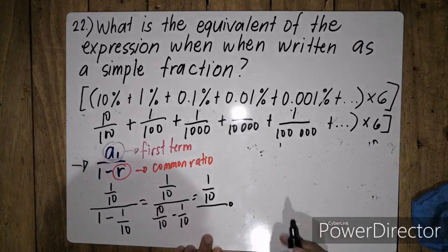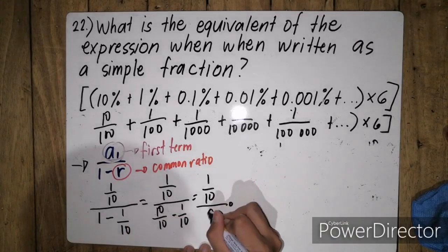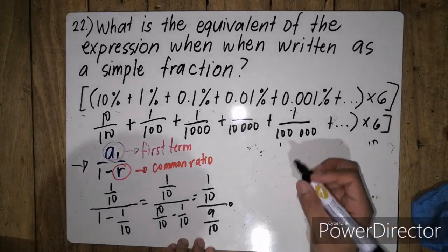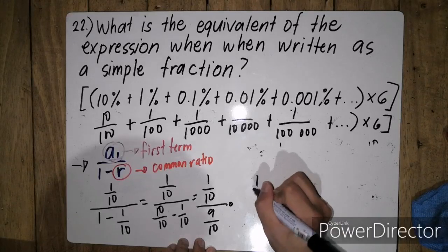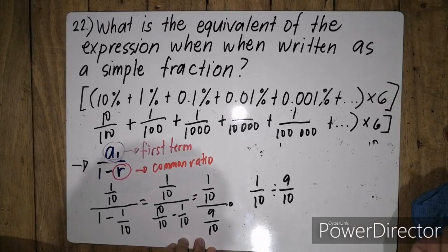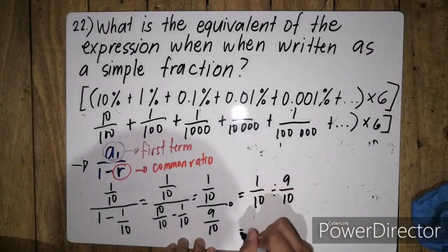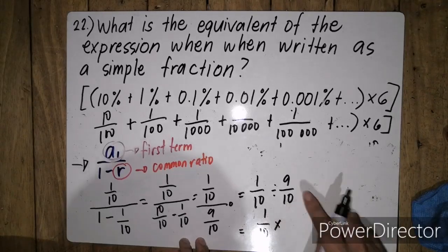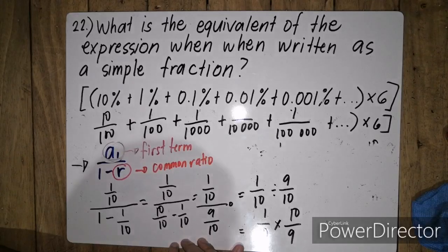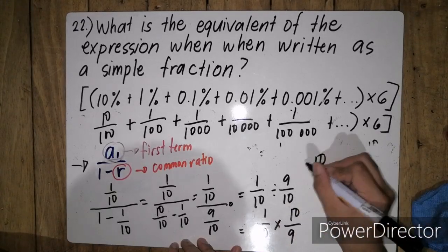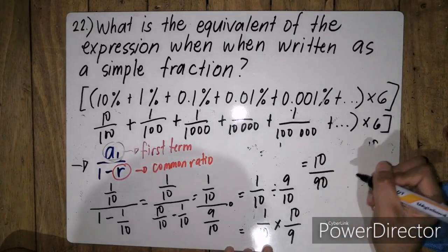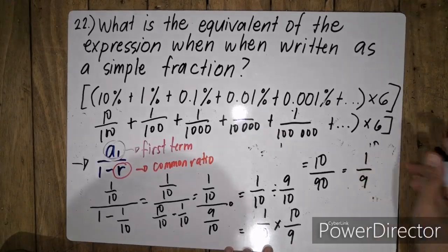Divided by 10 minus 1, which is 9 over 10. We can write this in the form of 1 over 10 divided by 9 over 10. That's simply equal to 1 over 10 times the reciprocal of 9 over 10, which is 10 over 9. 1 times 10 is 10, and 10 times 9 is 90 — so when we simplify this, we'll have 1 over 9.